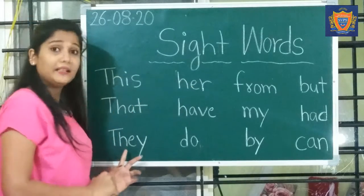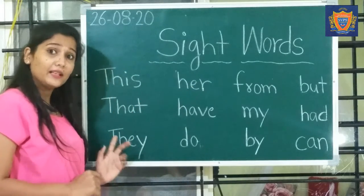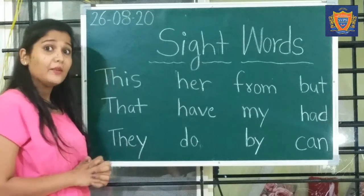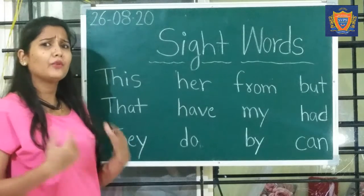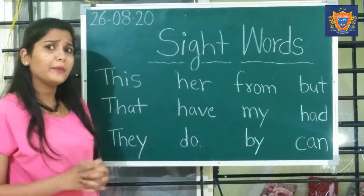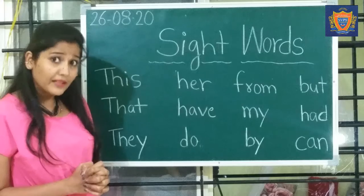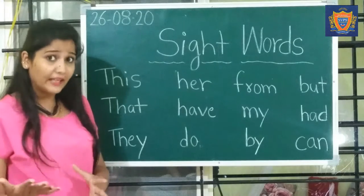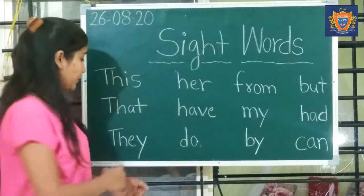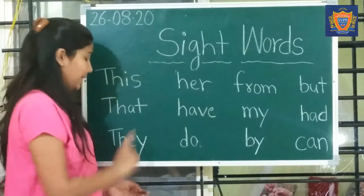These, that, and they. T-H-E-Y — they. When there are 3 or 4 or 5 people together, we denote them as 'they.' We use 'they' for a group of people.